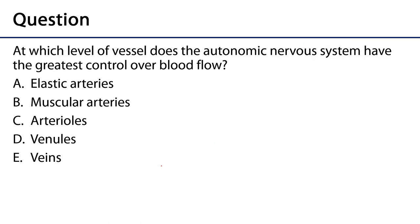At which level of vessel does the autonomic nervous system have the greatest control over blood flow? While the autonomic nervous system has some level of control wherever there is smooth muscle, the greatest level of control is at the arterioles — which is why we refer to arterioles as resistance vessels. Thank you very much for your time.